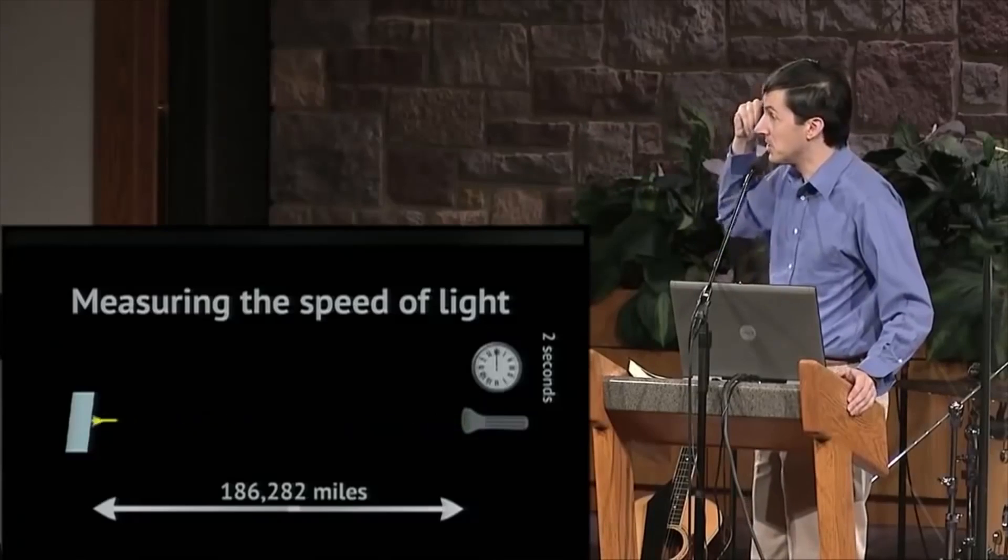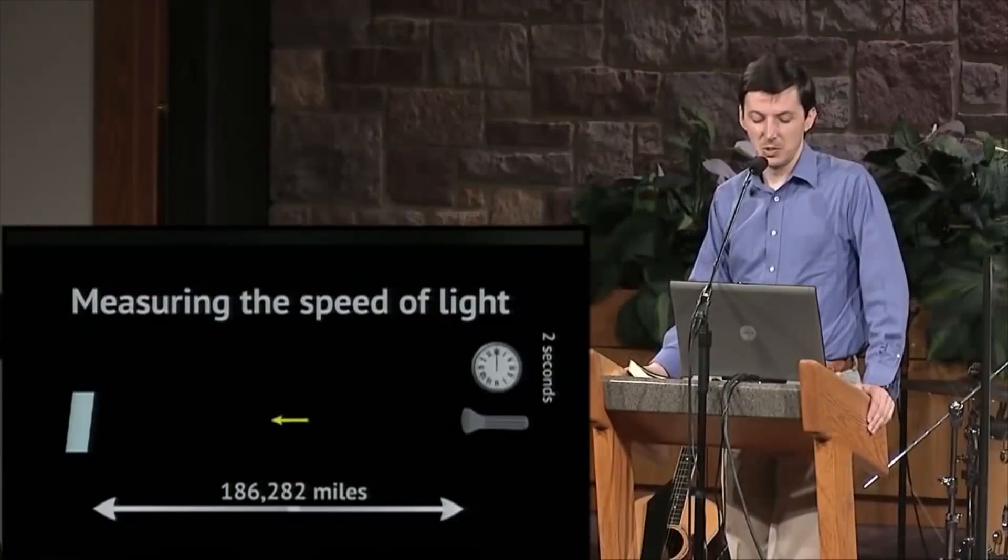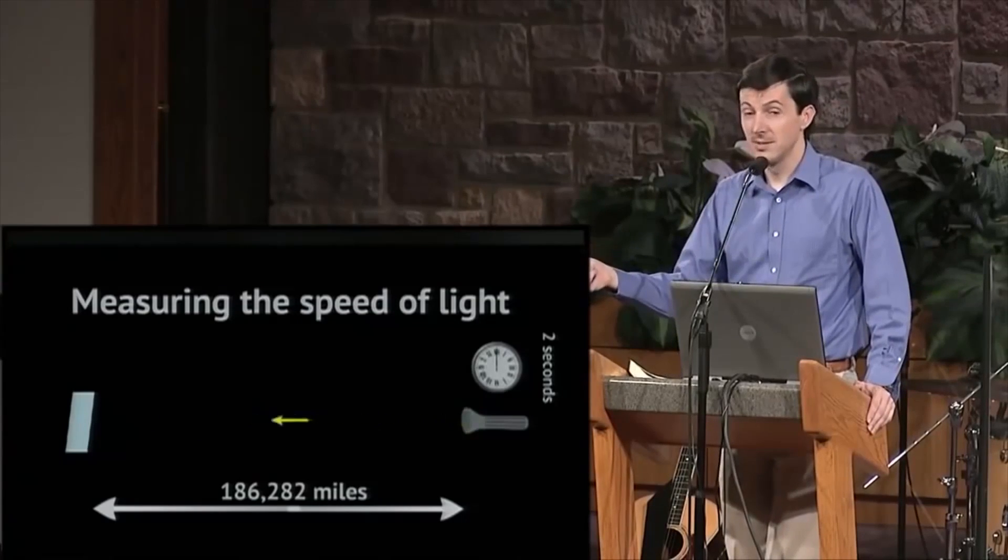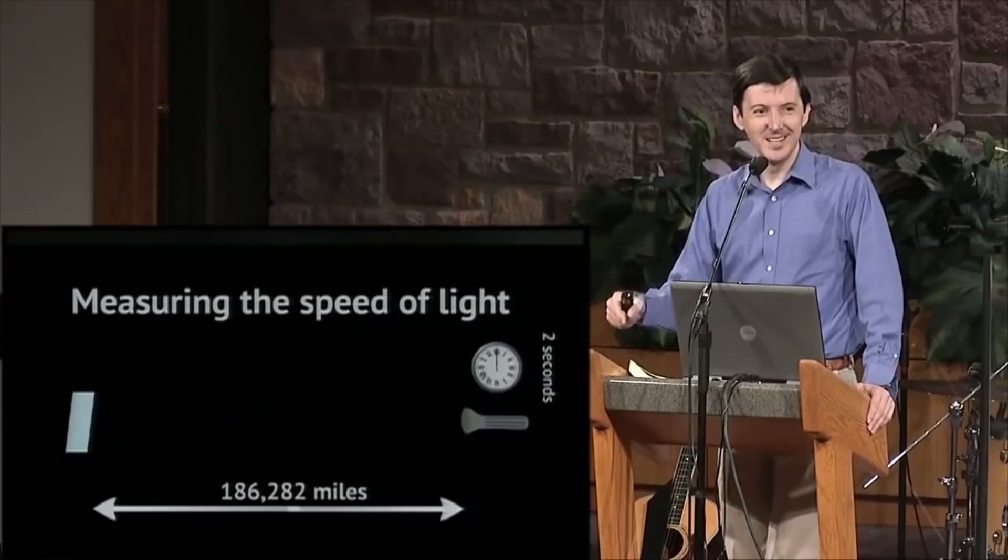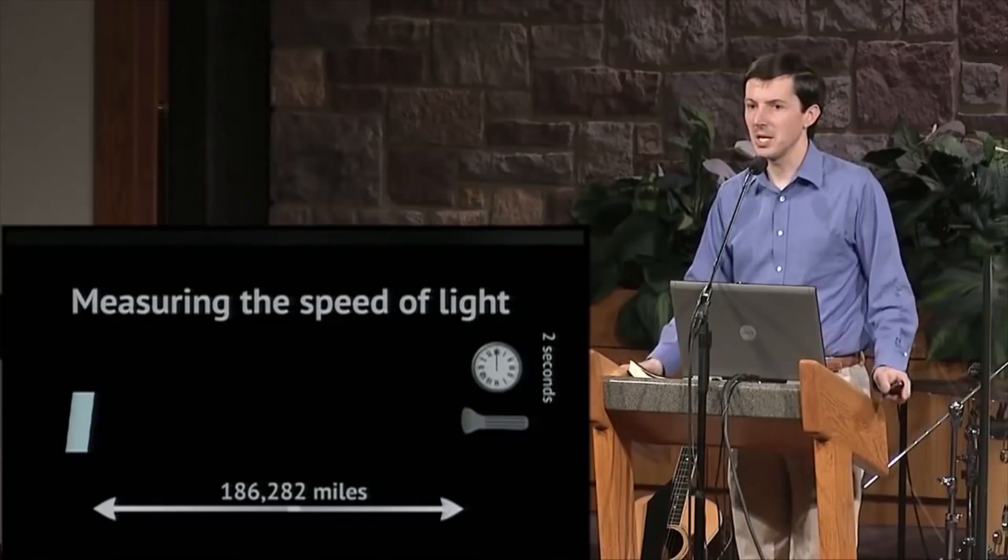And it'll reflect back. And as soon as I see the reflection, I'm going to look at the clock and see how much time has elapsed. And so it's traveled a distance of 186,282 miles twice. And it's taken two seconds to do that. So the average speed is 186,282 miles per second. That's how you get the speed of light. Well, there are plenty of other ways to measure the speed of light.